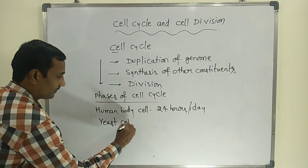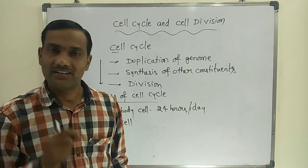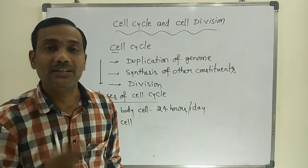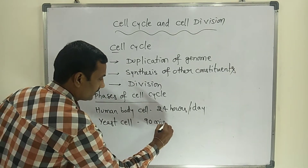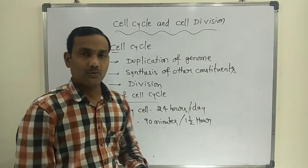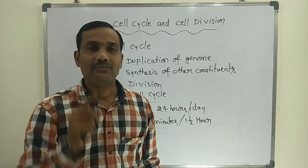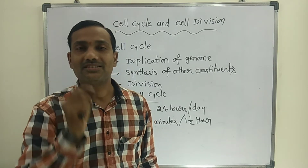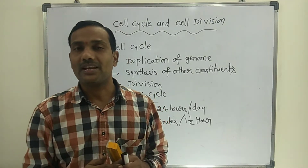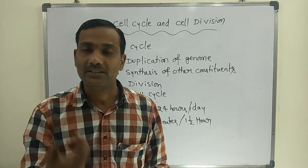Whereas yeast — yeast is the best example of a unicellular fungus — takes only 90 minutes for one complete division. Based on these two statements, we can understand that different cells take different amounts of time for one complete cell division.